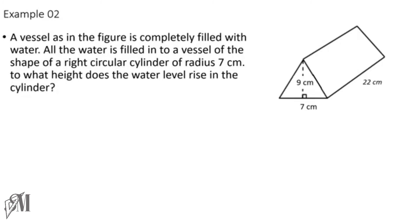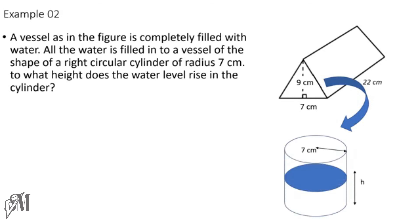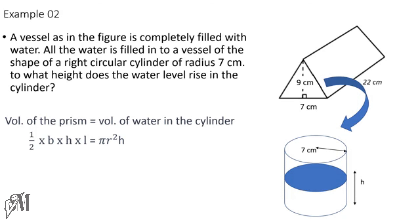The next example: a vessel in the shape of a triangular prism is completely filled with water and all the water is poured into a circular cylinder of radius 7 cm. We need to find the height h to which the water rises in the cylinder. We set up the equation: volume of the prism = volume of water in the cylinder, i.e., ½ × base × height × length = πr²h.